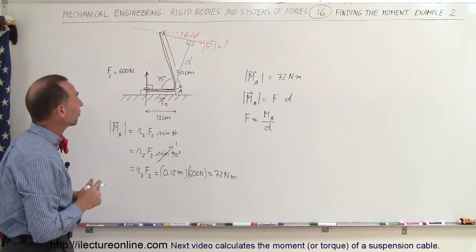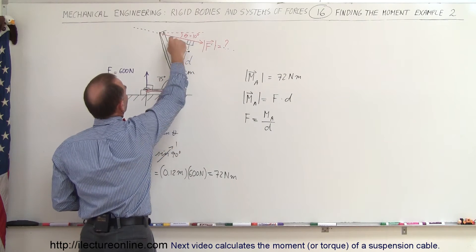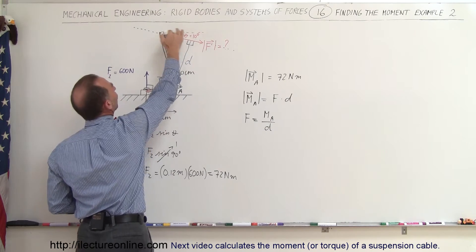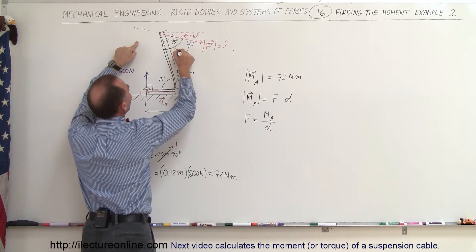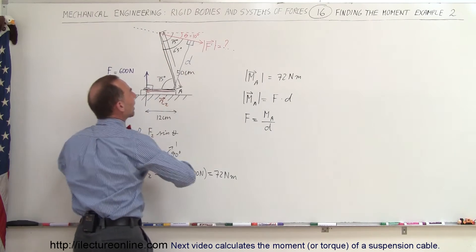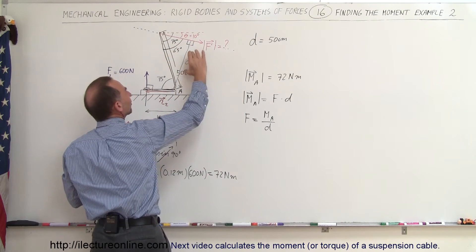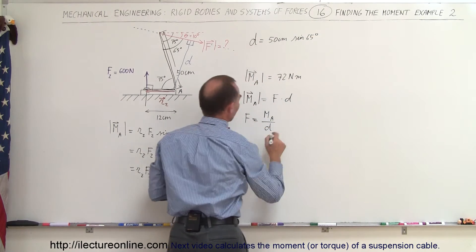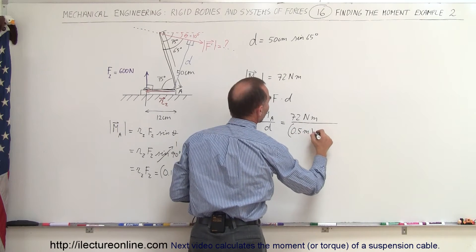Now it comes down to finding distance D. We have a triangle, and we need to find the angles. If this angle is 75 degrees, then this angle with respect to the horizontal is also 75 degrees. But with respect to the moment arm line, that angle is 75 minus 10 degrees, or 65 degrees. Since we're looking for D and we have the hypotenuse of 50 centimeters, D equals 50 centimeters times the sine of 65 degrees, because D is opposite to that angle.